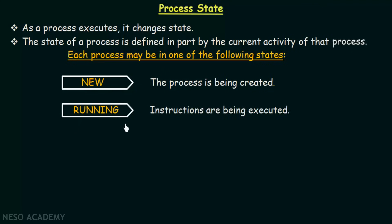The second state is the running state. When instructions are being executed, at that moment we say that the process is in the running state. So when the process begins its execution — that means when the instructions within the process are being executed — at that moment we say that the process is in the running state.